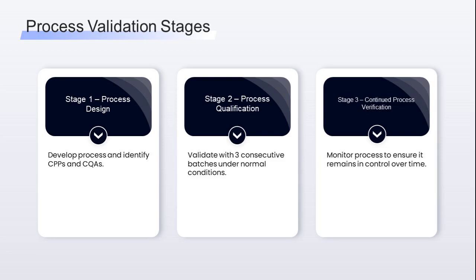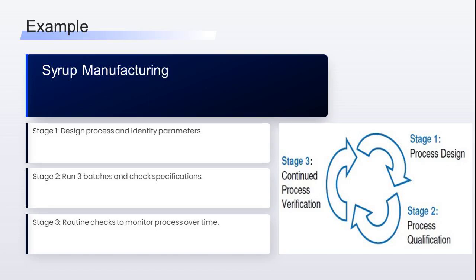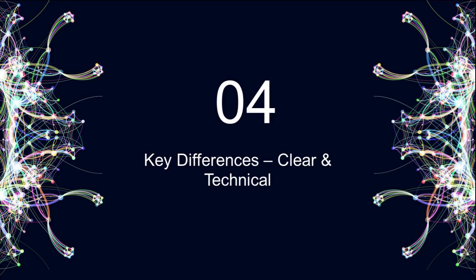Stage 3 is continued process verification: after validation, keep monitoring to ensure the process remains in control over time. For example, in syrup manufacturing — stage 1, design the process: dissolve sugar, add actives, mix for 30 minutes at 40°C. Stage 2, run three batches and check pH, viscosity, assay, and microbial limits — all meet specs. Stage 3, set up routine checks — one batch per month as trends to catch any drifts.